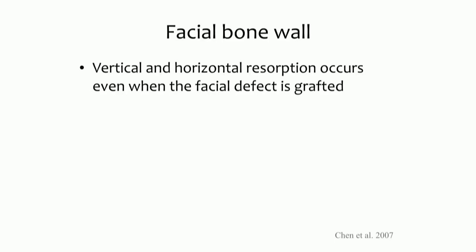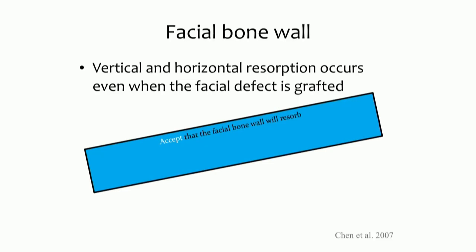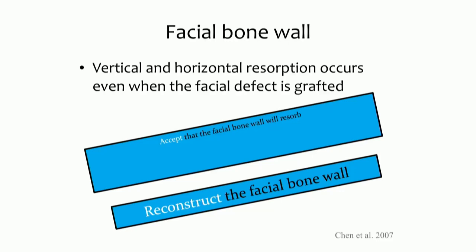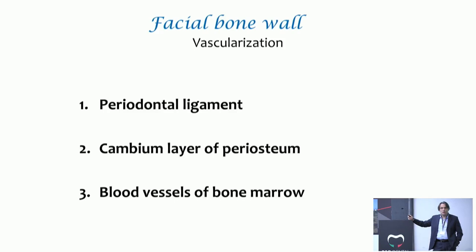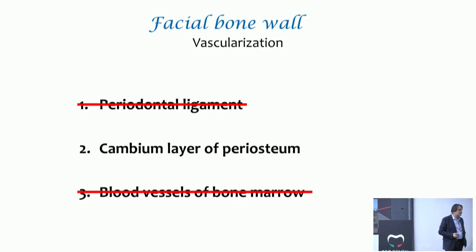A paper by Chain in 2007 stated that vertical and horizontal resorption occurs even when the facial defect is grafted. So, accept that the facial bone wall will resorb and reconstruct it. Why do we lose buccal bone? Mainly because we lose vascularization — there is little blood supply from the thin cortical layer. We also lose vascularization from the periodontal ligament when we extract the tooth, and vascularization from the cambium layer or periosteum is lost with a razor flap. Losing vascularization causes resorption.